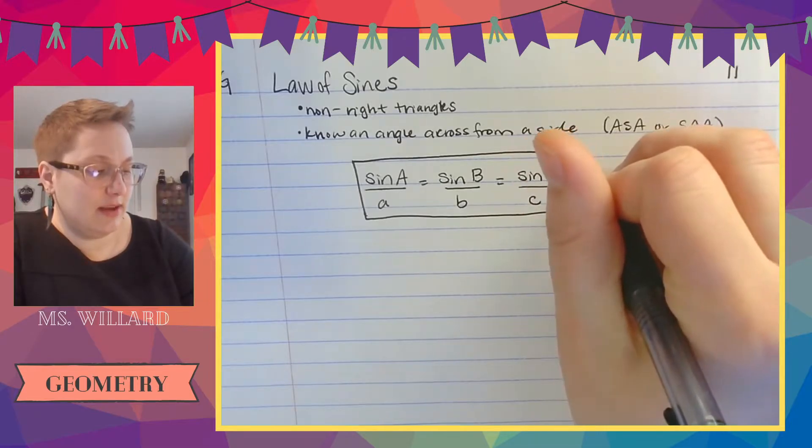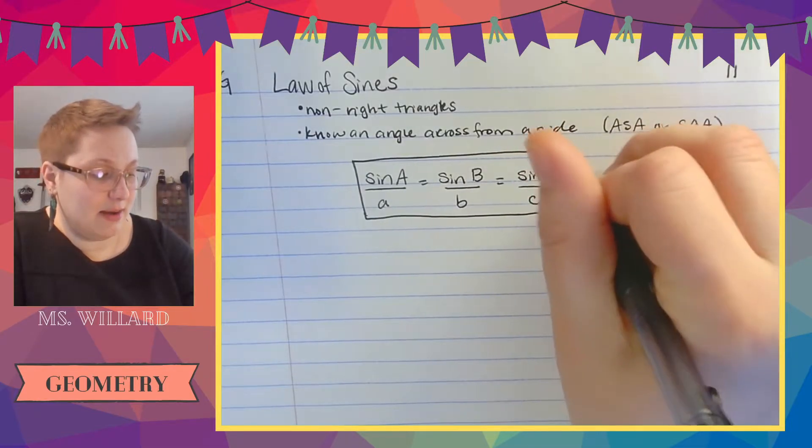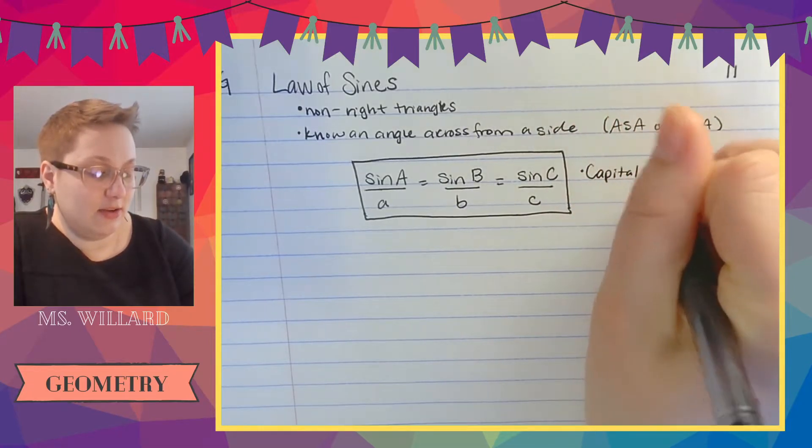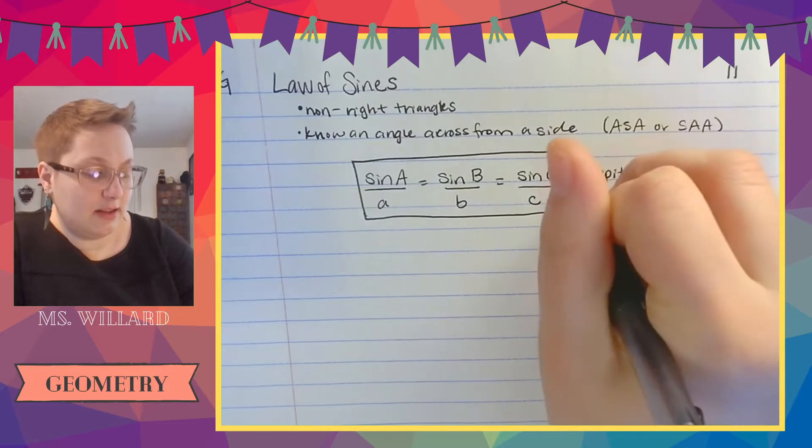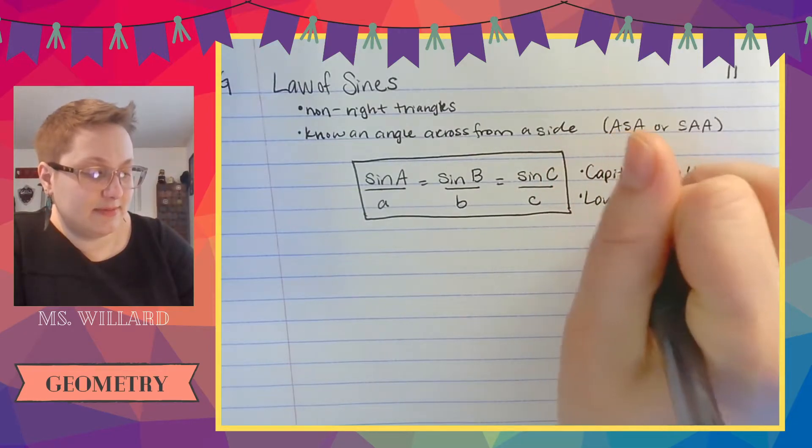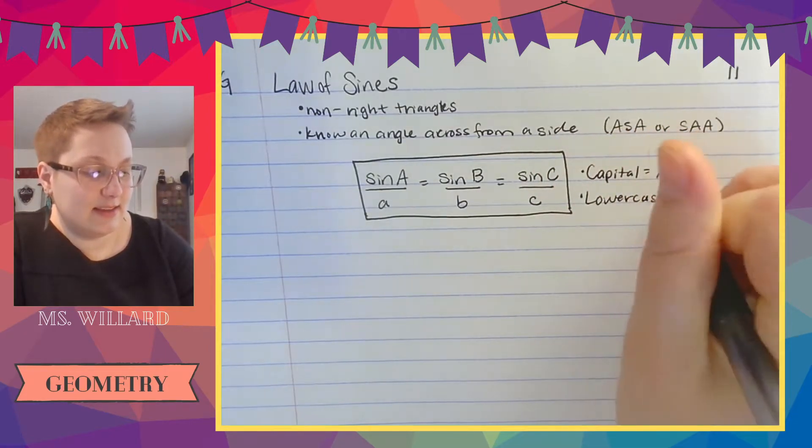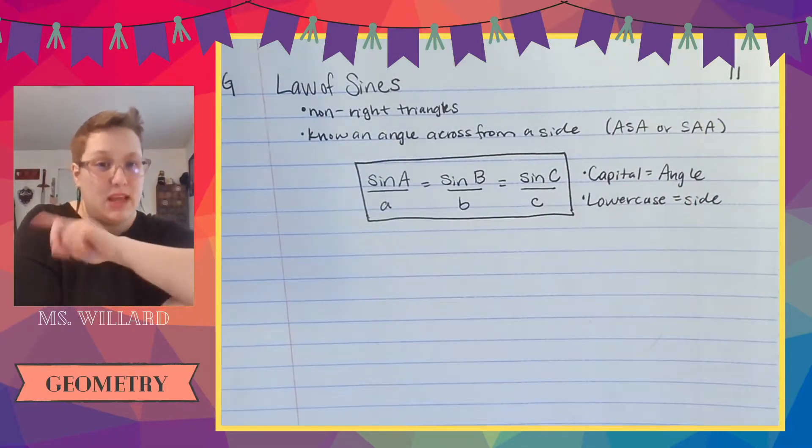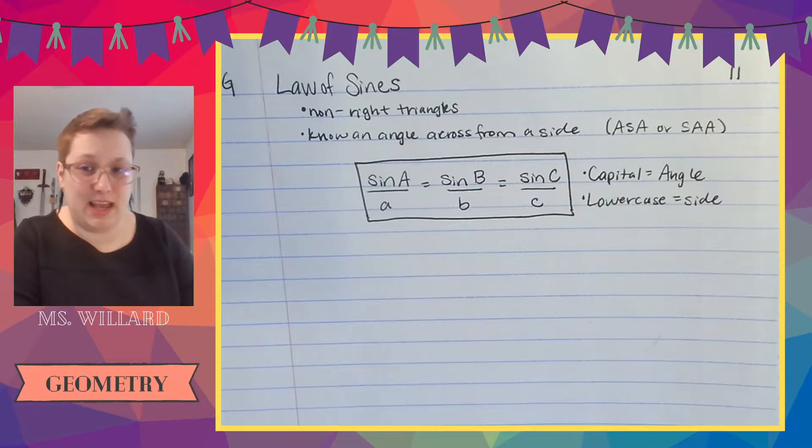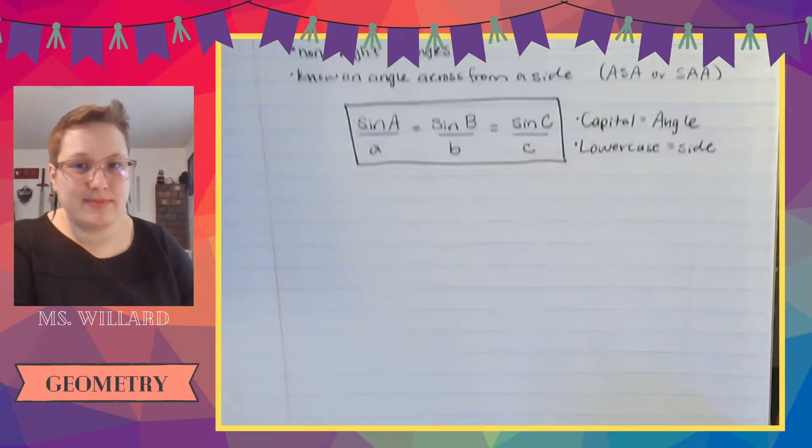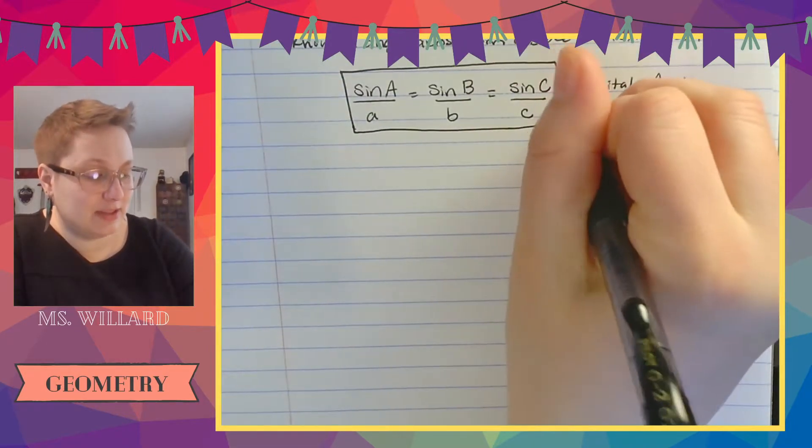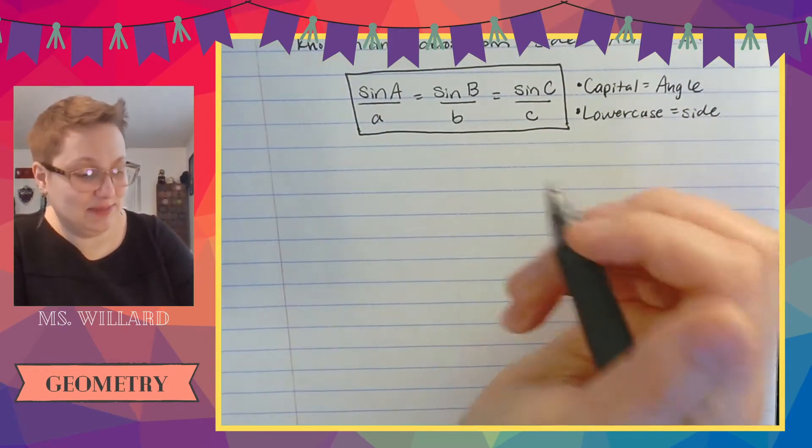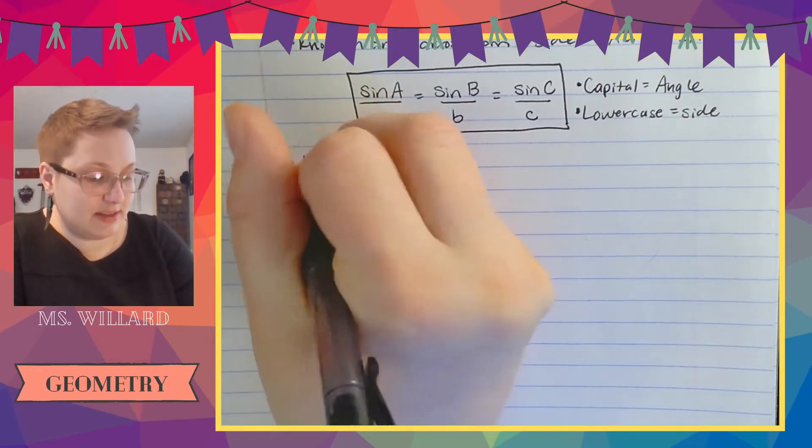So in every case a capital letter is an angle and a lowercase is a side and it's specifically the side across from the angle. They're pairs. I think I've told you this already but I just wanted to make sure because I've done this lesson three times and I wanted to make sure that I told you. Okay, so let's do the first example.